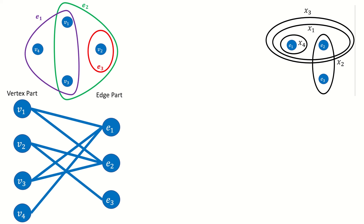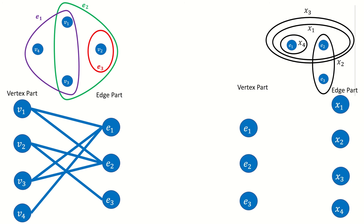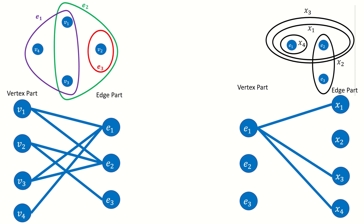Moving on, let's create the vertex set for the incidence graph of our dual. Note how we have the same number of vertices as the incidence graph of the original. Again, we only need to look at the edges incident to the smaller part in this bipartite incidence graph. e sub 1 will be adjacent to x sub 1, x sub 3, and x sub 4. e sub 2 will be adjacent to x sub 1, x sub 2, and x sub 3. And finally, e sub 3 will be adjacent to only x sub 2.